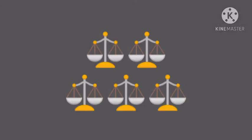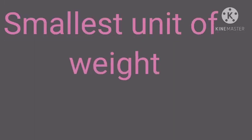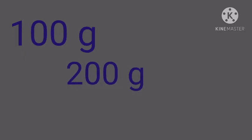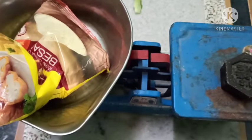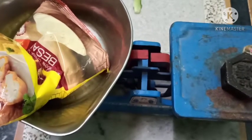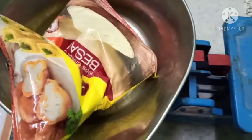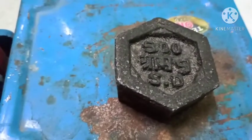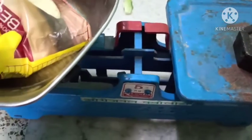Now let's understand the smallest unit of weight — that is gram, or g — like 100 g, 200 g, 500 g. When we buy things in small quantities, we measure them in grams. Look, this packet is equal to 500 g. In this way we measure things in small quantities.